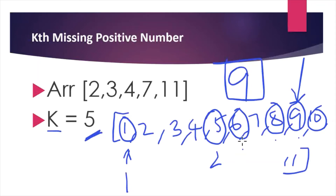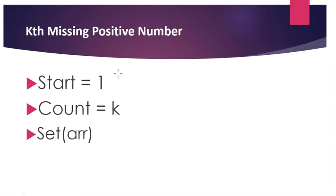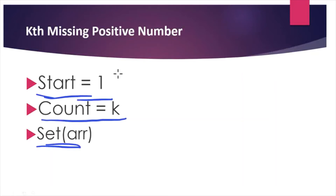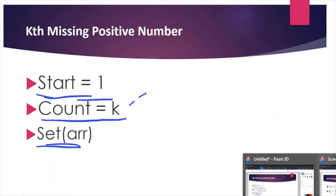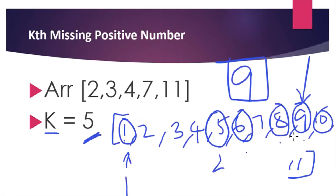Let's dive into the algorithm. We are going to have three variables. The first is a set — we create a set and copy all values of the array into it. The second is start, initialized to one, which increments every time it encounters a new positive integer to iterate from one to n. The third is count, initialized to k, which decrements every time it encounters a missing number.